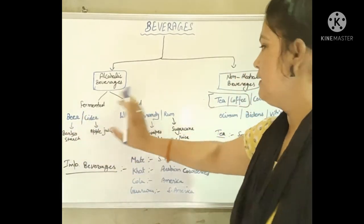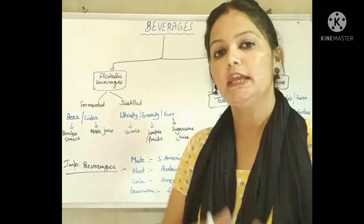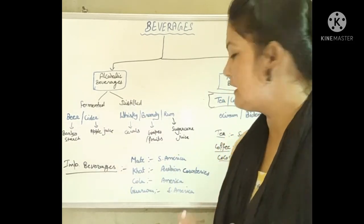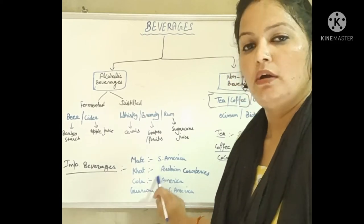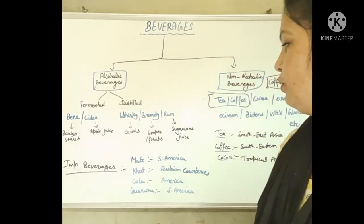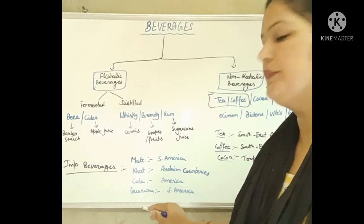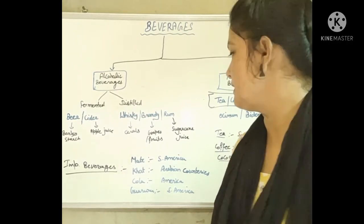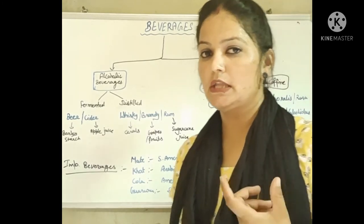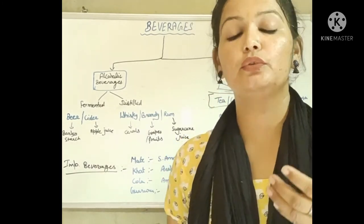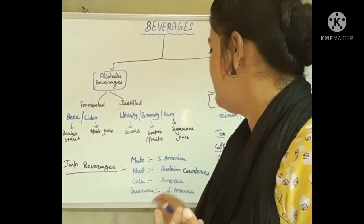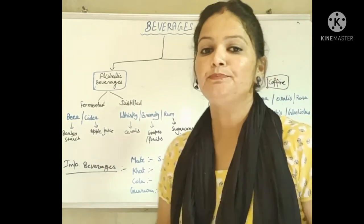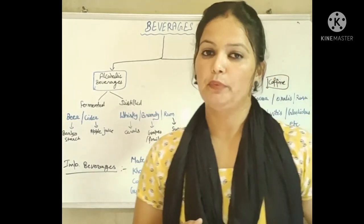Other important non-alcoholic beverages include mate, fat (khat), cola, and guarana. Mate and guarana are famous drinks in South America. Cola is also from America. Khat is famous in Arabian countries as a favorite beverage.